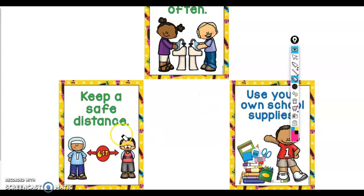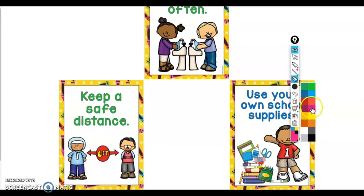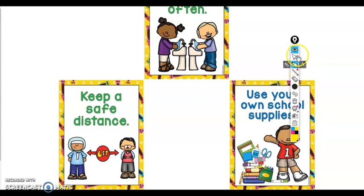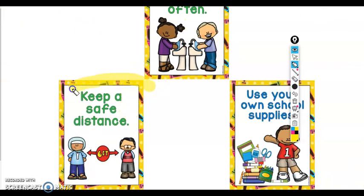Maybe I'm going to talk about social distancing — staying six feet away from each other. I forgot to pick my color, let's pick yellow. What this really does is when I click on the Epic Pen, it does an overlay over the entire screen so that I can write on that overlay.